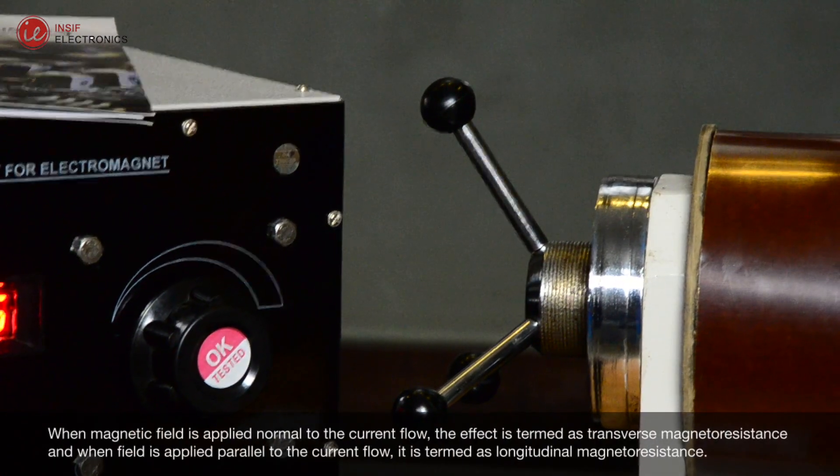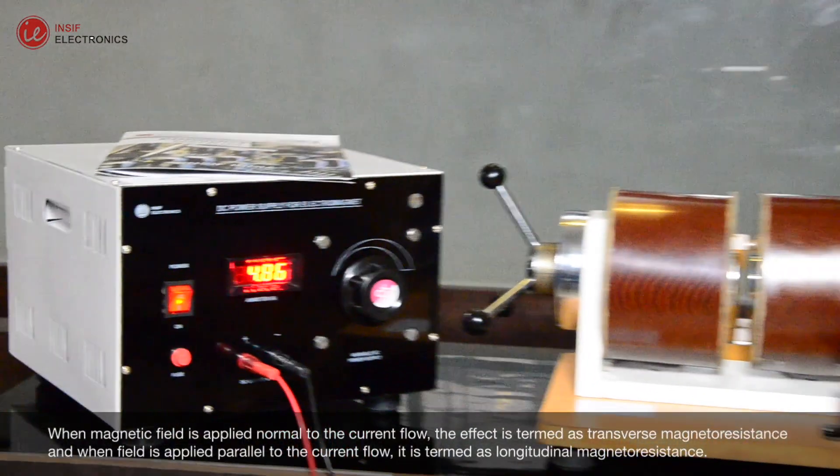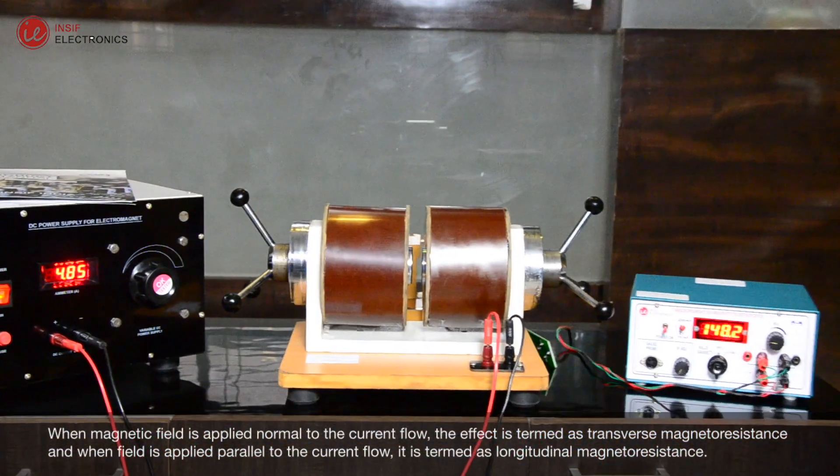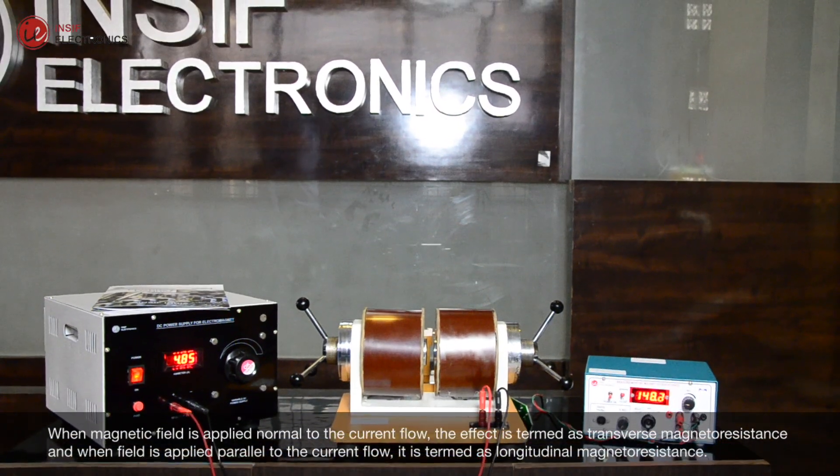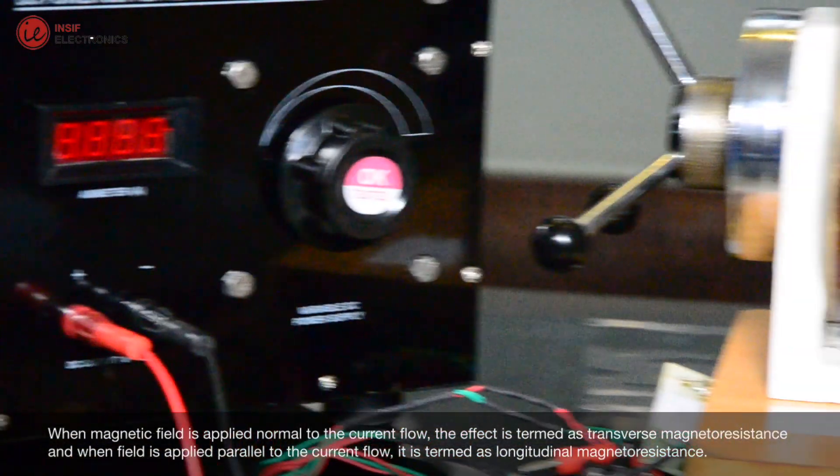When magnetic field is applied normal to the current flow, the effect is termed as transverse magnetoresistance, and when field is applied parallel to the current flow, it is termed as longitudinal magnetoresistance.